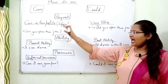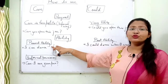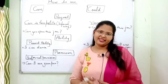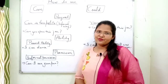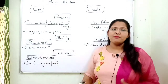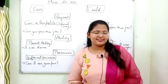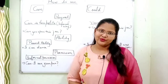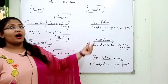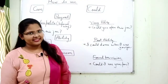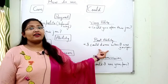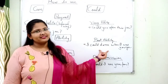Can is used to express present ability. For example: I can dance. And could is used to express past ability. For example: I could dance when I was younger.